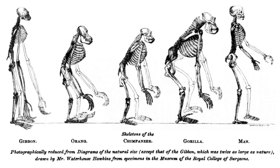Selective breeding, also called artificial selection, is the process by which humans use animal breeding and plant breeding to selectively develop particular phenotypic traits and characteristics by choosing which typically animal or plant males and females will sexually reproduce and have offspring together.